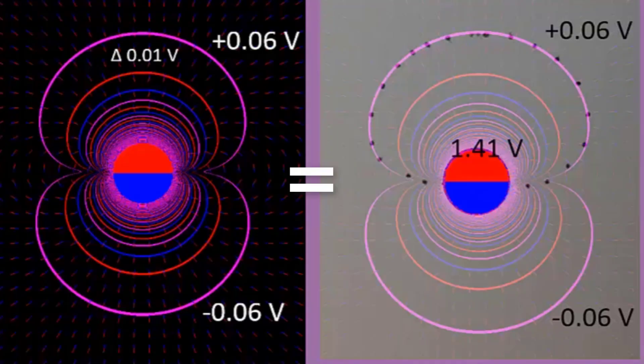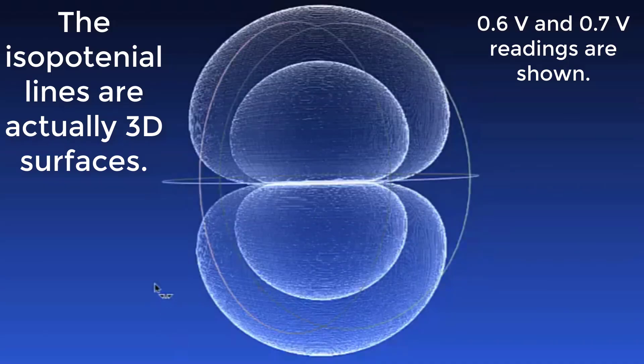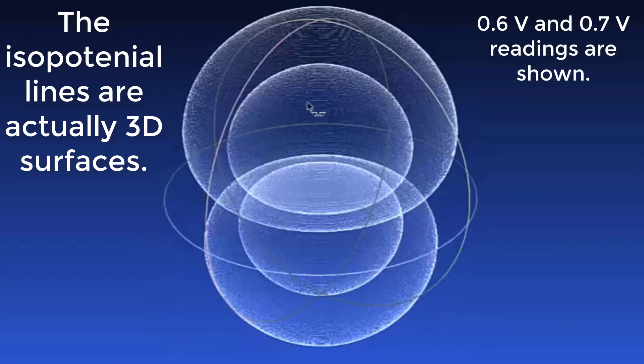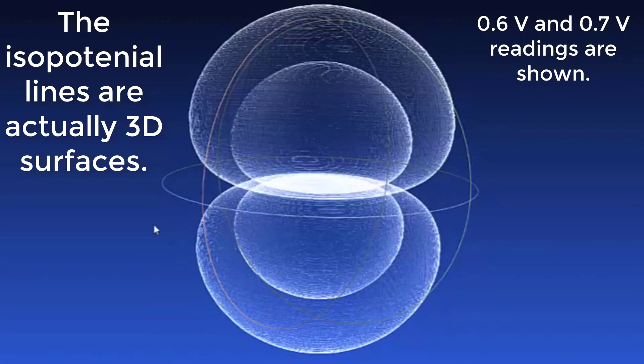Fractal Woman's voltage readings match the isopotentials plotted from Michael Snyder's Pick2Mag software. The isopotential lines are actually 3D surfaces. The 0.6 and 0.7 volt readings are shown.